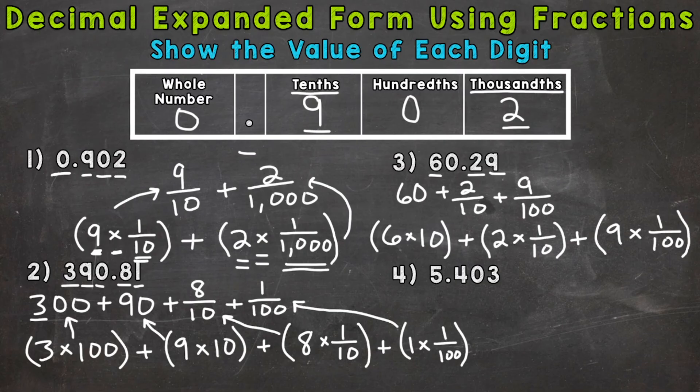And lastly, on to number four, where we have five and four hundred three thousandths. So we start with the five, and that has a value of five, plus this four has a value of four tenths. Plus, we don't need that zero, so we jump to the three there, that has a value of three thousandths.